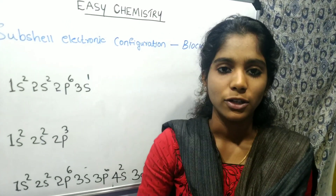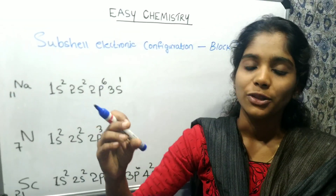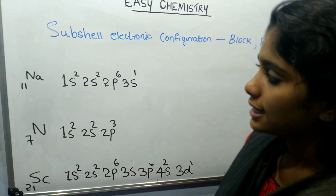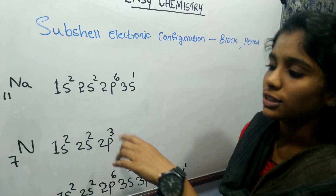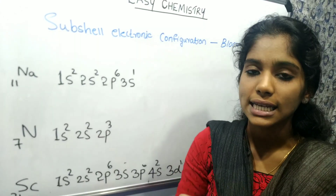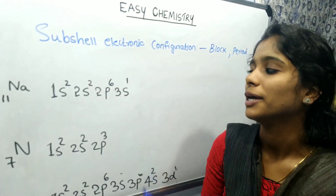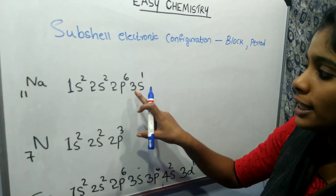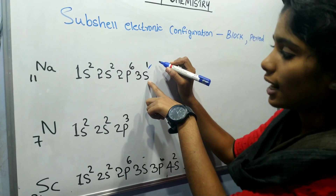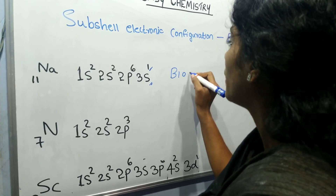Now, sub-shell electronic configuration — we will take elements of the S, P, D, and F blocks and check the period. For example, sodium: sodium's sub-shell electronic configuration ends in the S sub-shell. The last electron is in S, so sodium belongs to the S block. The S block is determined by the last electron entering the S sub-shell.